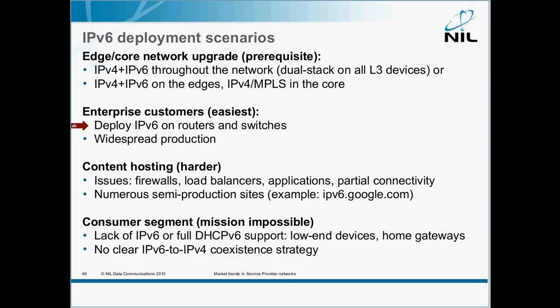If you want to be a content hosting provider, you have interesting problems. Some firewalls have glitches — for example, PIX from Cisco can't provide failover in IPv6 mode. Load balancers, applications, and then you have to deal with partial connectivity.